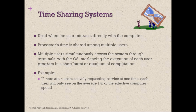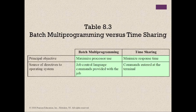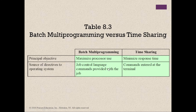Table 8.3 compares batch multi-programming versus time-sharing. Both use multi-programming, but batch multi-programming's principal objective is to maximize processor use, while time-sharing aims to minimize response time. For batch, directives come from job control language commands provided with the job; for time-sharing, commands are entered at the terminal. Table 8.4 shows types of scheduling — the key to multi-programming — with four types typically involved.